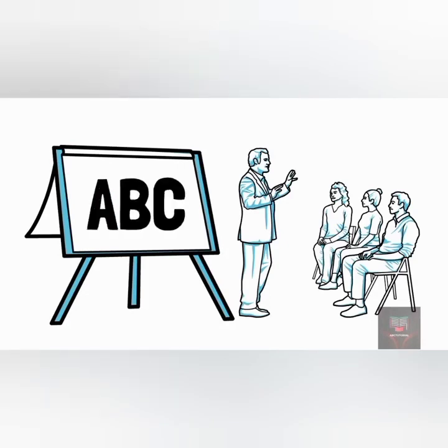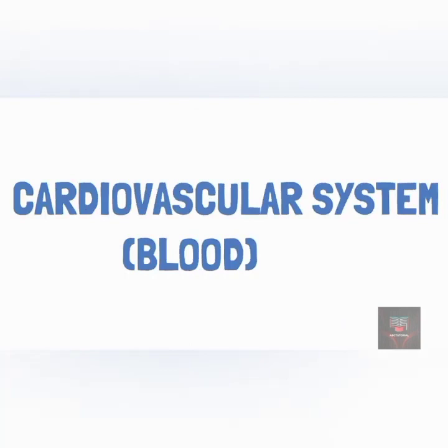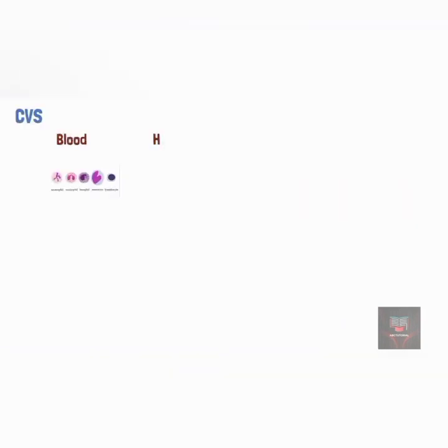Welcome to ABC tutorial. Today we are going to talk about the cardiovascular system. The cardiovascular system consists of three interrelated components: the blood, the heart, and the blood vessels.